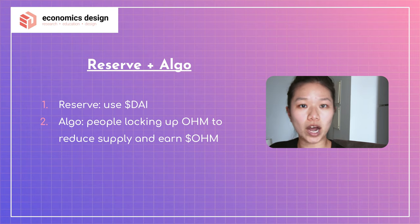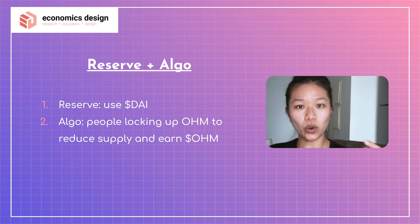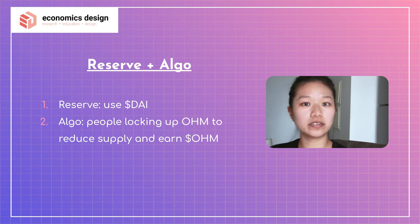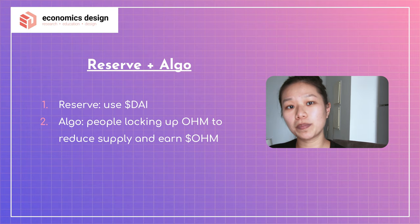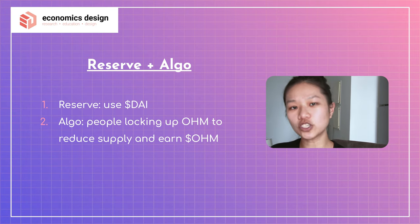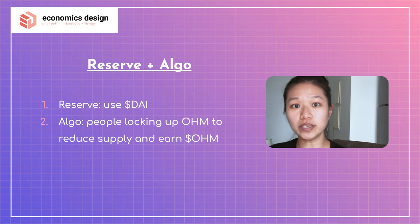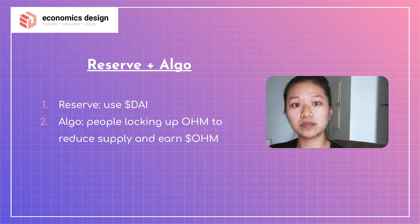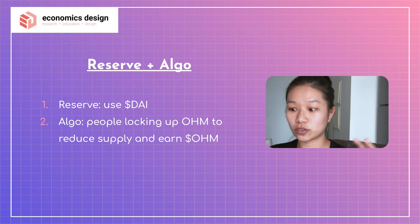How do you have it both reserve and algorithmic? The reserve system uses DAI — for every one OHM out there, part of it is backed by DAI, and the other part is backed algorithmically. The price changes based on the amount of circulating supply of OHM, depending on how many tokens are locked up and how many are used for exchange and transactions. The reserve part can be adjusted to increase or decrease, while the algorithmic part creates different mechanisms to determine the price.